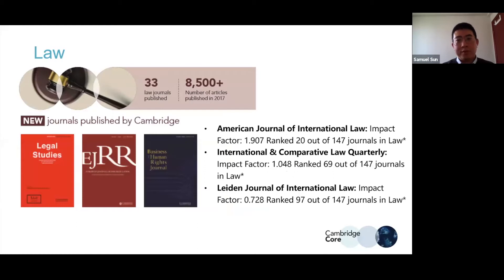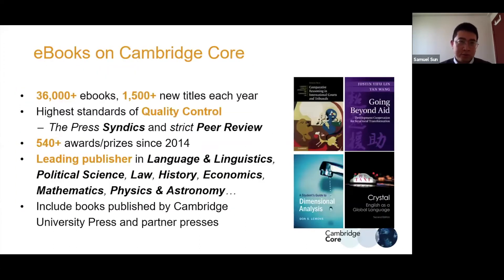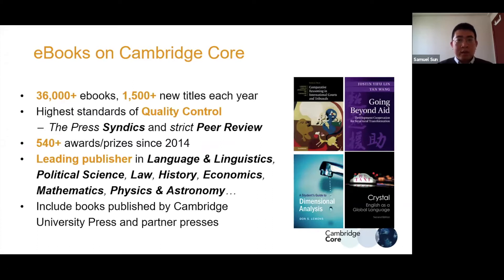Now let's move to eBooks. Currently most of our content has been transferred to the unified platform, Cambridge Core. On this platform we currently have over 36,000 eBooks, and each year we add about 1,000 to 1,500 new titles. Our strong subjects in books include language and linguistics — we are the world's leading publisher in language and linguistics — as well as political science, law, history, economics, mathematics, physics, and astronomy.